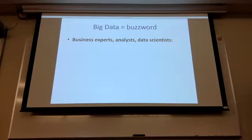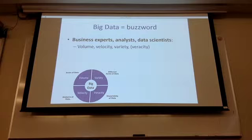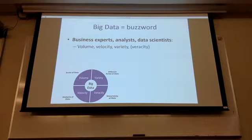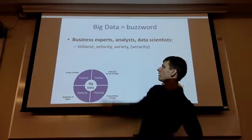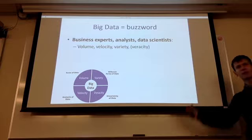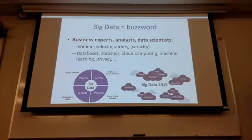If you talk to more technical people — business experts, data scientists — you start to hear something more specific. This crowd came up with four words to describe big data. Initially it was three V's, then four. The key ones are volume, velocity, and variety: the size of your data, how fast it's coming at you, and how many different types of records you have. Veracity is a newer addition, somewhat similar to variety.